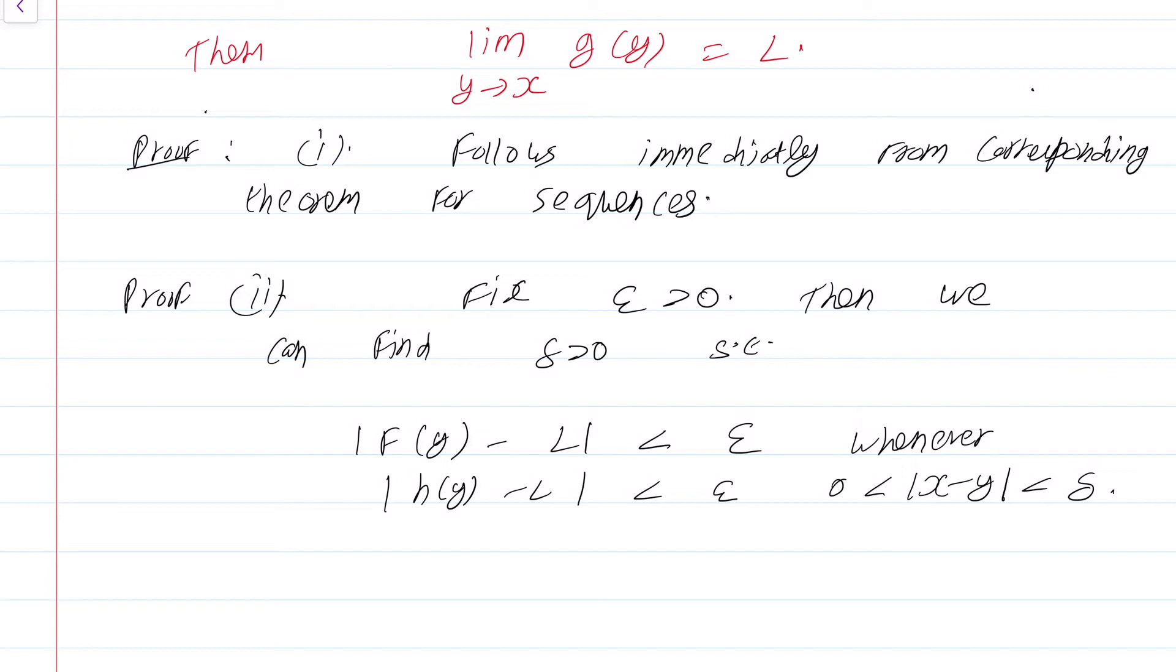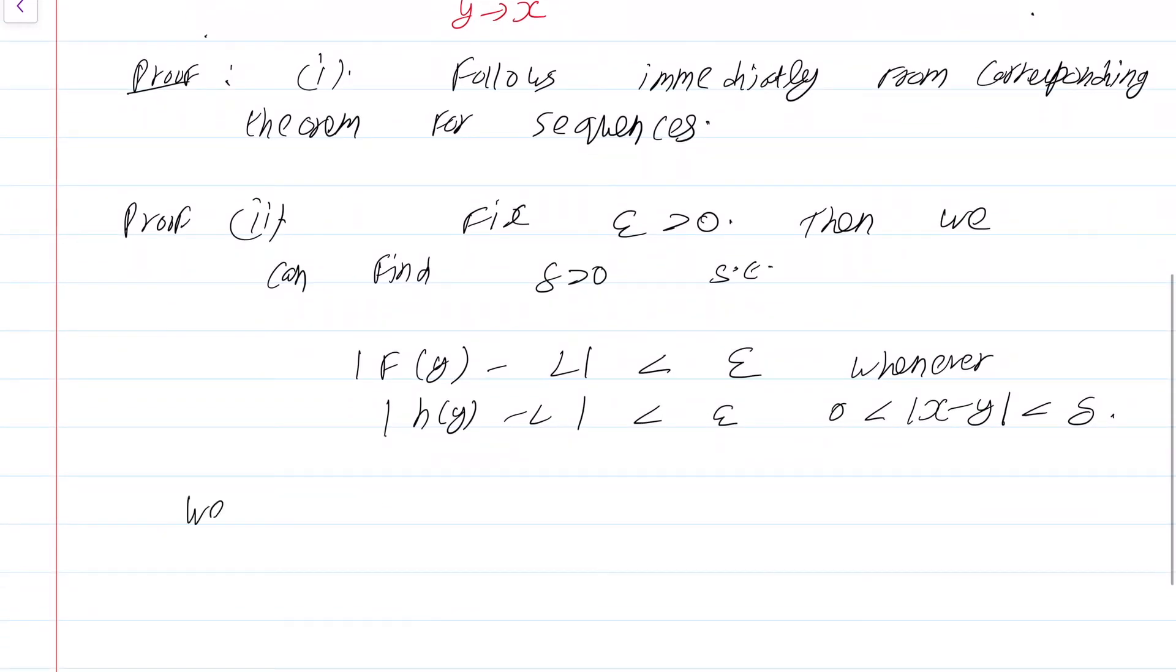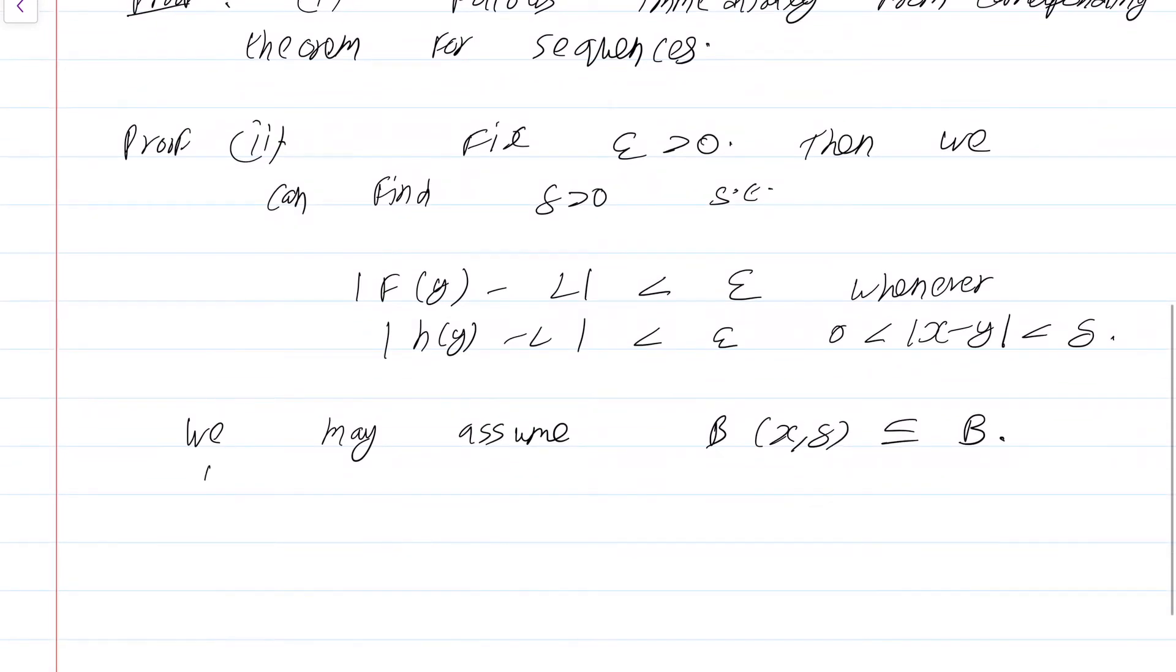Since I have done such things quite a bit for sequences, I will not be explicitly saying anymore how exactly this delta was constructed satisfying these two conditions simultaneously. We may assume B(x, delta) is contained in B. If not, just make delta even smaller in order to make B(x, delta) contained in B.